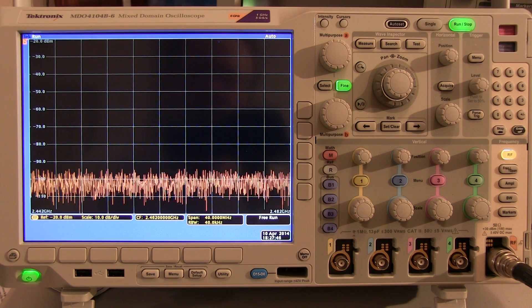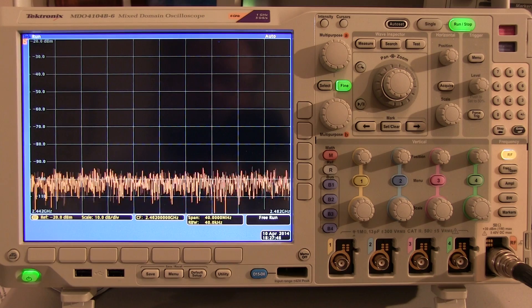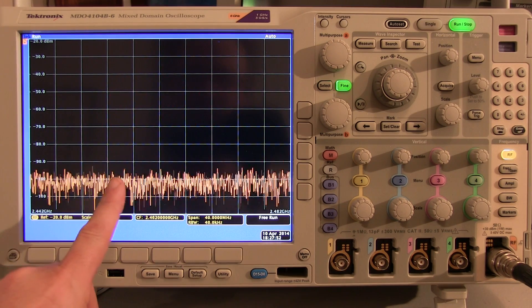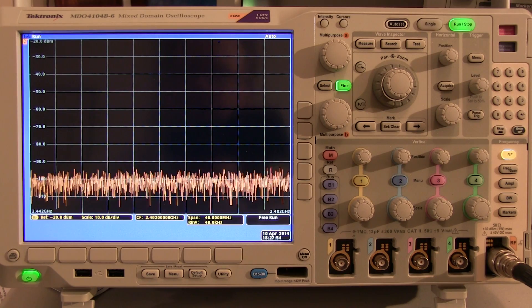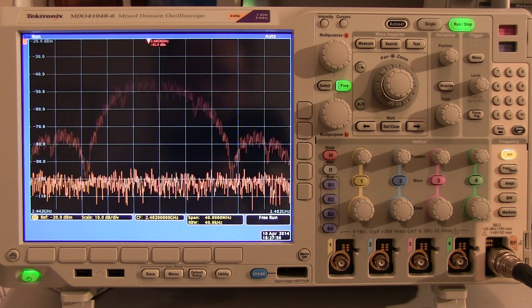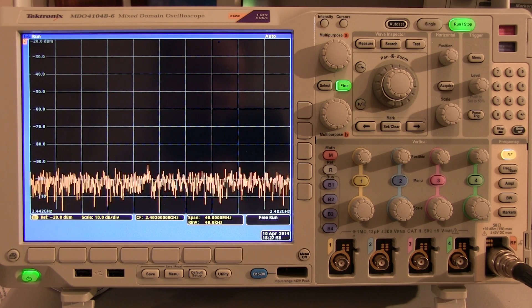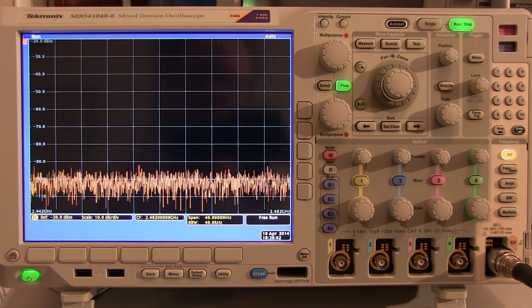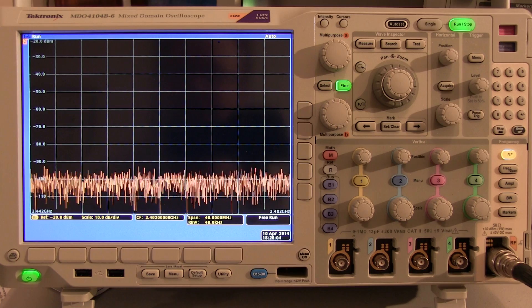In this video, we're going to take a look at how to make an RF channel power measurement on a bursty, low-duty cycle signal like this wireless LAN beacon signal we're seeing here using the Tektronix MDO4000. This is a tricky measurement to make because you have to ensure that the channel power measurement is made only when the burst is present and not when it isn't.